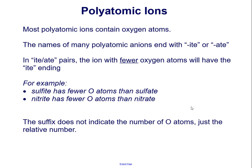Most polyatomic ions contain oxygen atoms. The names of many polyatomic ions end with -ite or -ate. In -ite and -ate pairs, the ion with fewer oxygen atoms will have the -ite ending. For example, sulfite has fewer oxygen atoms than sulfate, and nitrite has fewer oxygen atoms than nitrate. The suffix does not indicate the number of oxygen atoms, just the relative number.